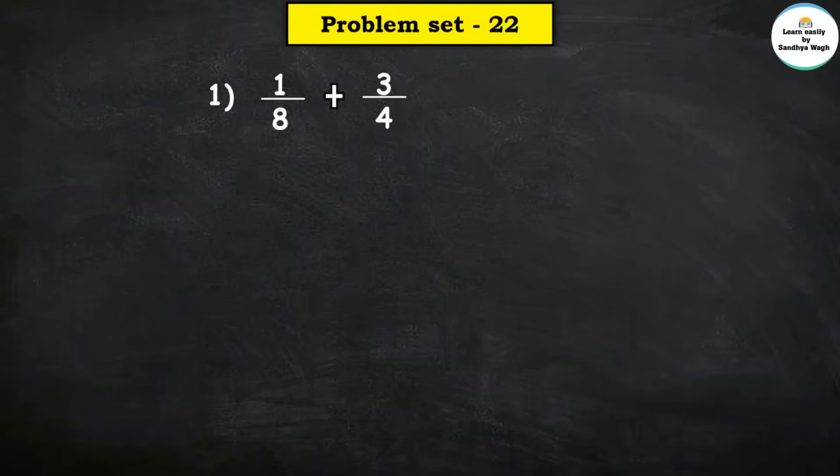Here we have to add the fraction 1 upon 8 to the fraction 3 upon 4. Observe the 2 denominators — they are different. These are unlike fractions. To add unlike fractions, we have to convert them to like fractions first.